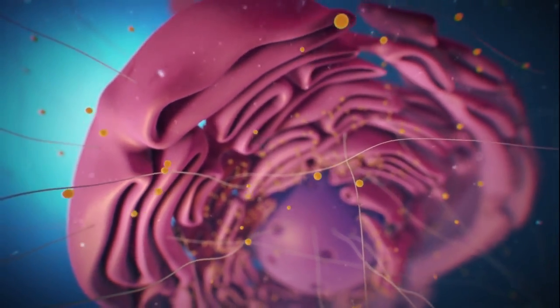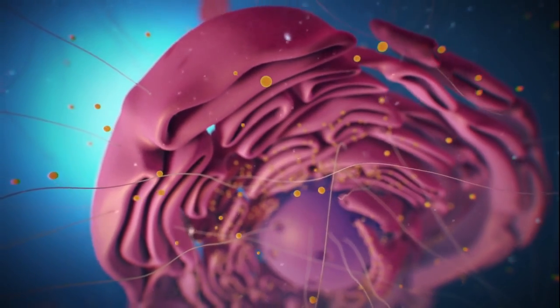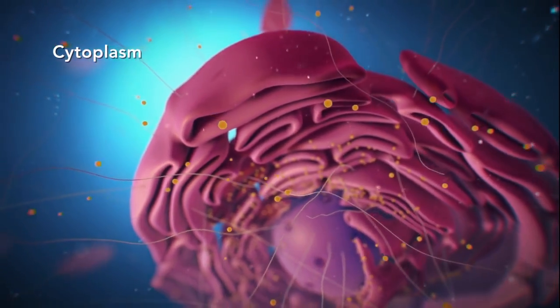Outside the nucleus, the ribosomes and the rest of the organelles float around in cytoplasm, which is the jelly-like substance.